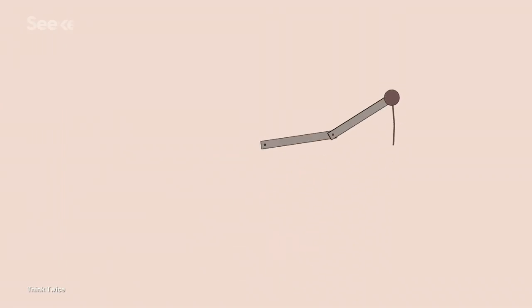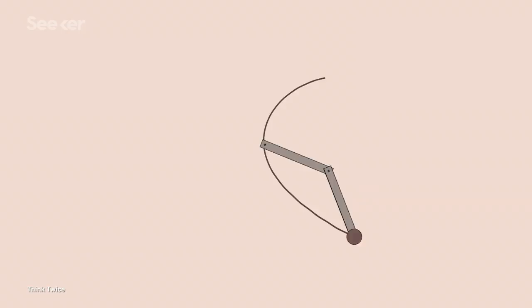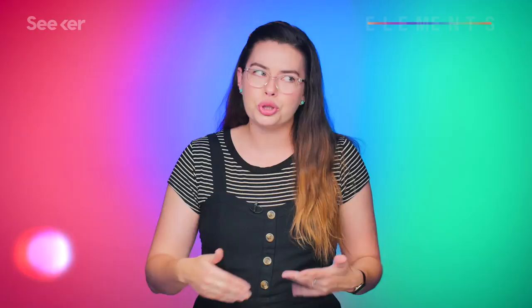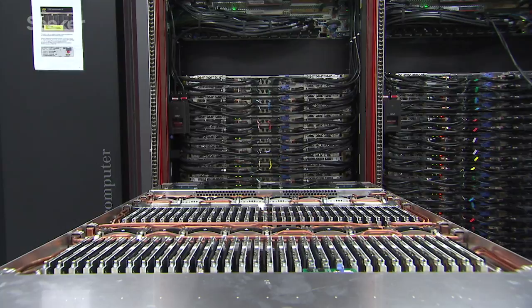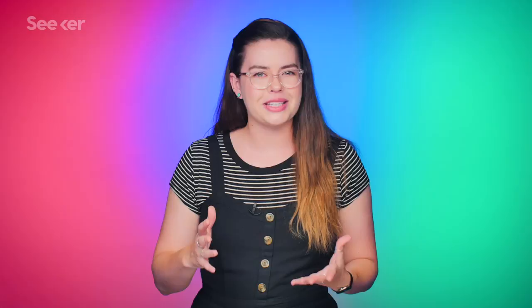If someone showed you a swinging pendulum like this, and asked you to calculate the pendulum's position at some point in the future, you might think it'd be relatively simple — we should be able to predict that with the known laws of motion, right? But this calculation is actually so complicated that it requires a computer. And even if you did do this calculation, and were offered slightly different initial conditions, you might think the output would only be slightly different. But instead, you get chaos — specifically, deterministic chaos.